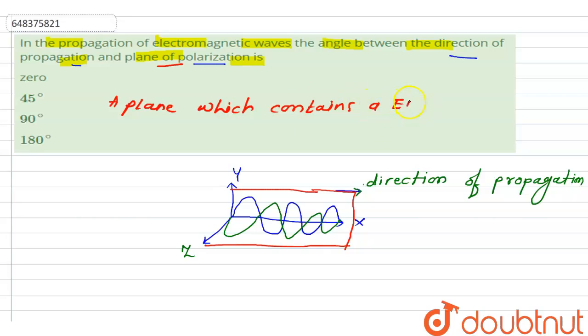A plane which contains the electromagnetic field. This is the electromagnetic and it is contained in this plane, and the propagation of the direction is called plane of polarization.